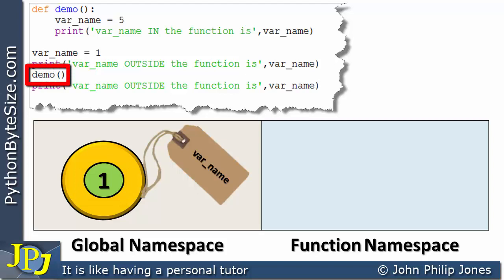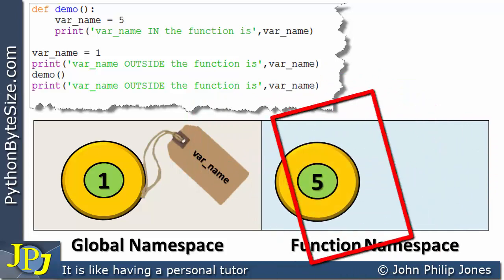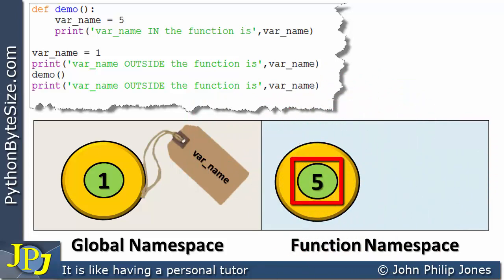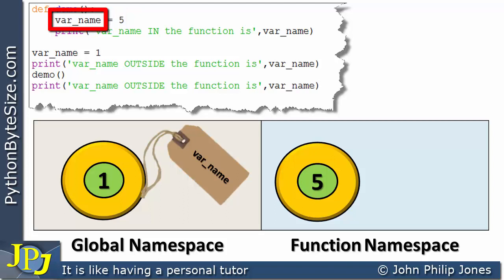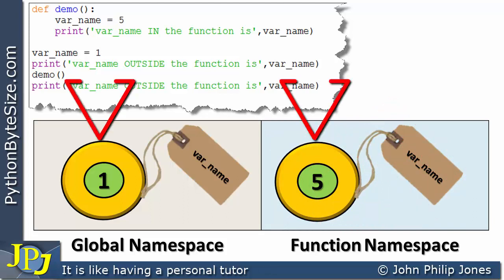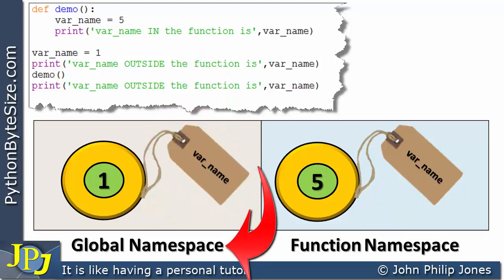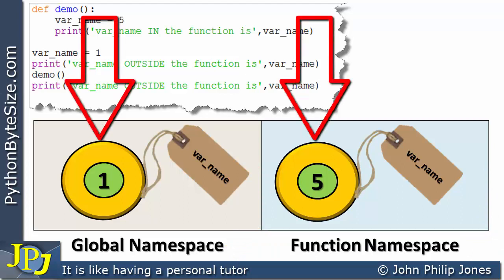Then we call the function. The first line of the function creates an instance of the integer class with the value 5, labeled var_name — but this instance appears in the function namespace. So when the print statement inside the function runs, it accesses the label in the function namespace and outputs 5. Python can distinguish between these two objects, even though they have the same name, because they are in different namespaces.